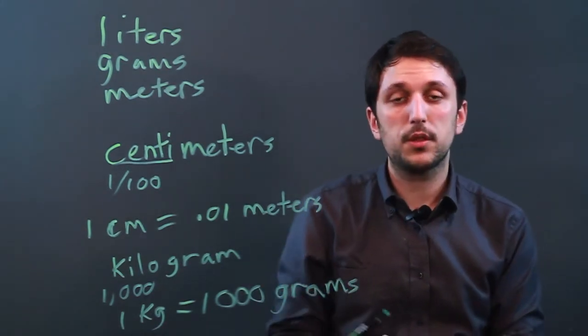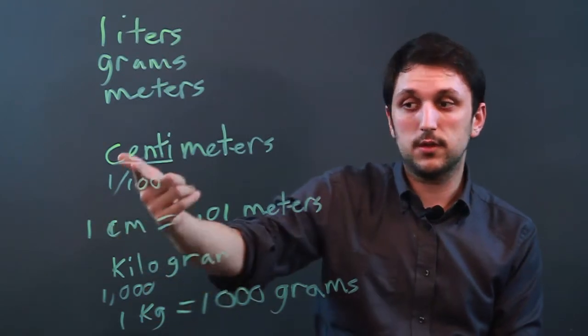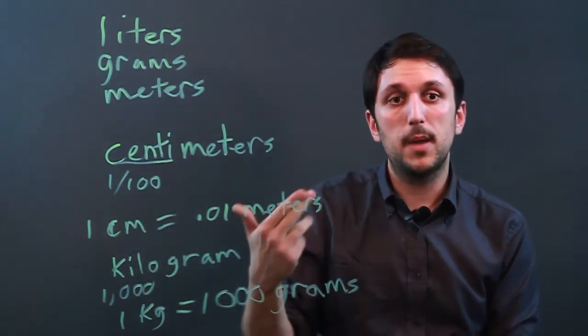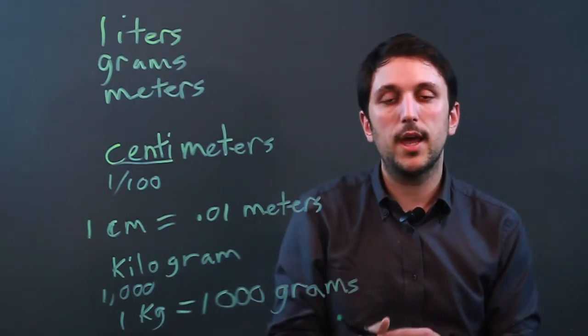So the important thing to remember is that every prefix has to do with an order of magnitude. Centi is one one-hundredth. Kilo is 1,000. Mega would be one million. Milli would be one one-thousandth and so on.